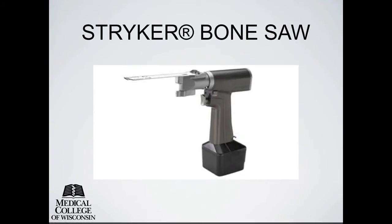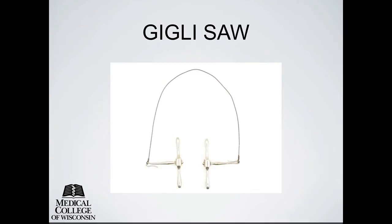This is a picture of a hand-held battery-operated bone saw by Stryker. In our training video, which you will see shortly, we use a Stryker bone saw. This bone saw works very much like a cast saw. This is also a picture of a giggly saw, which is in the field amputation kit as a backup in case the battery-powered saw doesn't work. This saw is more challenging because both hands are needed for operation, leaving no hands free for retraction of the soft tissues.